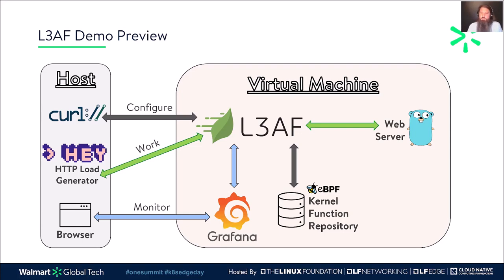On this virtual machine, we're running a couple of Go-based web servers where we can send test traffic. We're hosting a kernel function repository where LEAF can download the eBPF programs it will manage and execute. We're also running Prometheus and Grafana to show some of the metrics that LEAF provides for the eBPF programs it's running. On the left-hand side, we have our host, which can access all of these services on the virtual machine via configured ports.